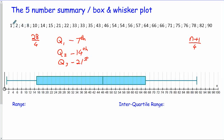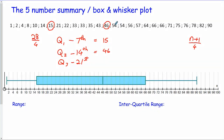Counting through: positions 1 to 7 — 15 will be our first quartile. Positions 8 to 14 — 46 will be our second quartile, or median. Positions 15 to 21 — 66 will be our third quartile.